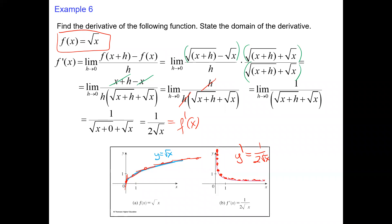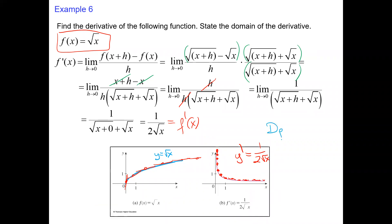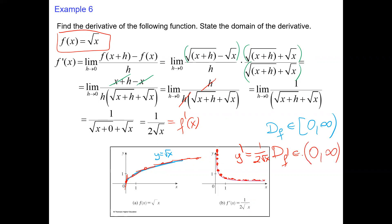Regarding the domain: the original function's domain is positive numbers including zero. But the domain of the derivative is positive numbers excluding zero, because we cannot substitute x equals zero — the derivative doesn't exist at zero; that fraction is undefined at zero.